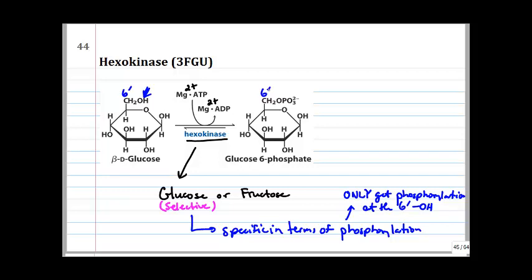So how is it that this enzyme will only, with glucose, phosphorylate the 6' position? This is a specificity issue. It is specific toward phosphorylation at the 6' position. So the question is, why? Let's dig a little deeper into this.